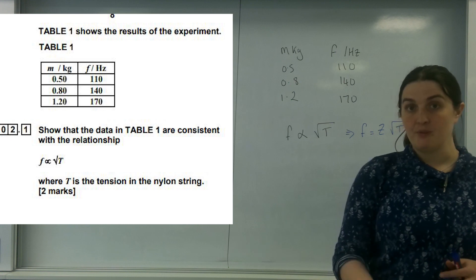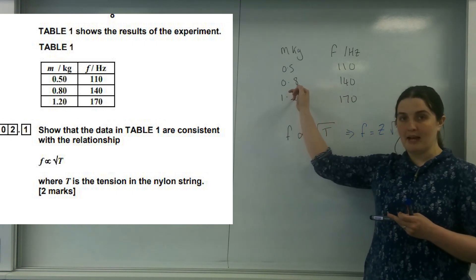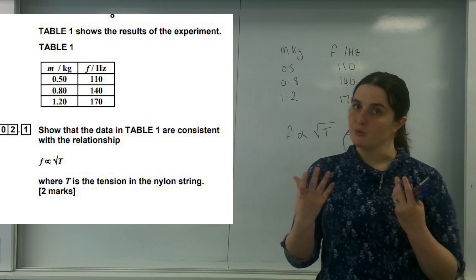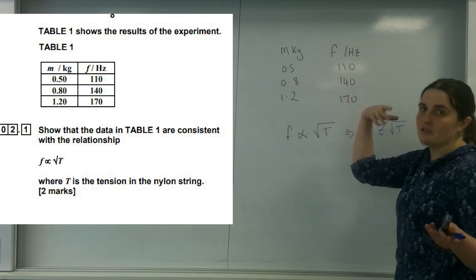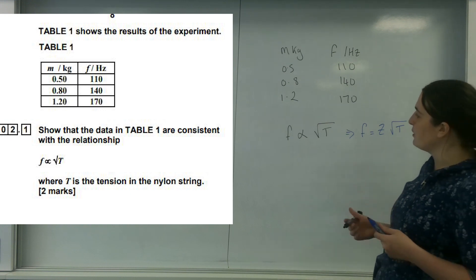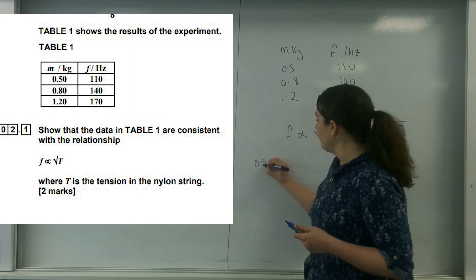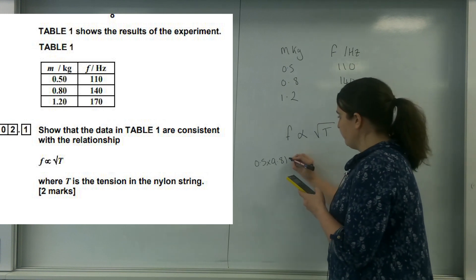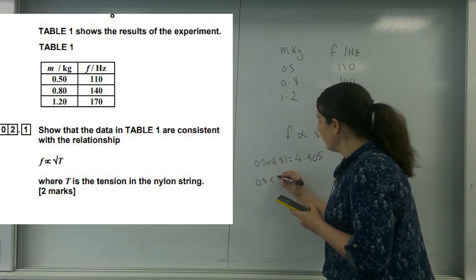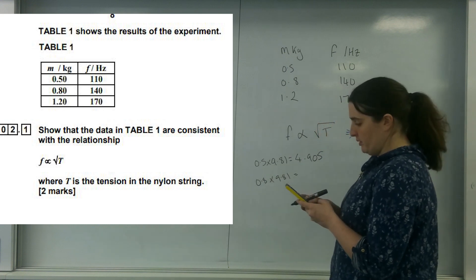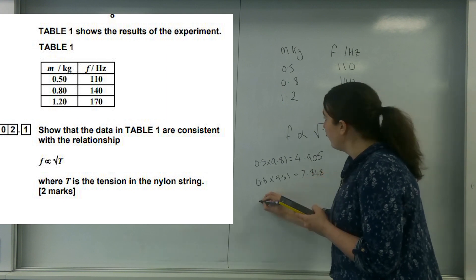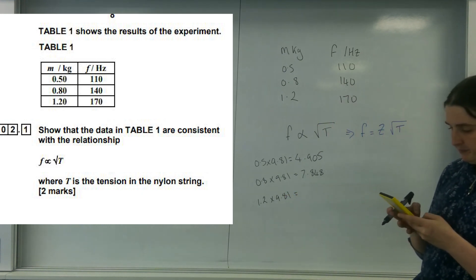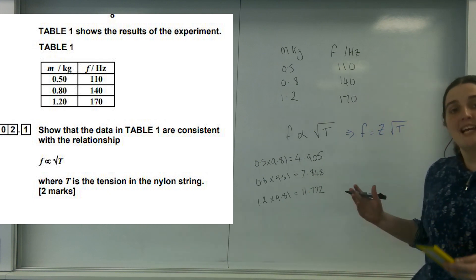When you are given this, you're supposed to do this for every single point in that chart. Do not just do it once. You need to do it for every single point. This is only worth two marks. A little twist they've done here is they've put tension and mass up here. One of the things you must do is realize that tension in string is related to the mass. What they've done is hung a mass off the string, and that mass has a weight and that weight causes a tension. So the first thing I'm going to do is convert all of these masses into weight. I'm going to times it by 9.81.